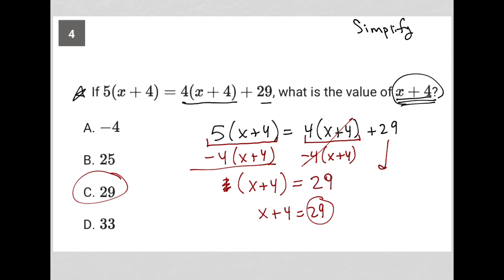Now, had you not noticed that, you could have done it exactly how I started off to do it, which is just to distribute the 5 across, distribute the 4 across, get like terms, add those all together, figure out what x is equal to, and then simply add 4 to that value. Either way, you'll get the right answer. I just think that this way is a little bit faster if you recognize that x plus 4 is already integrated into the question.